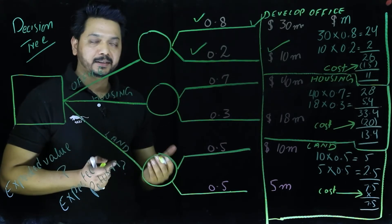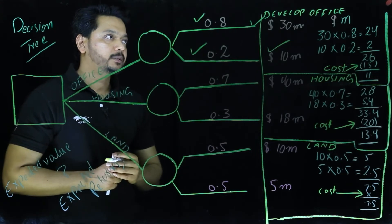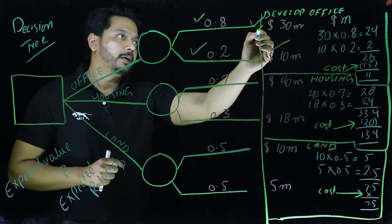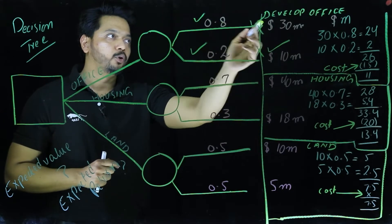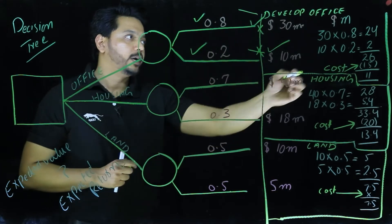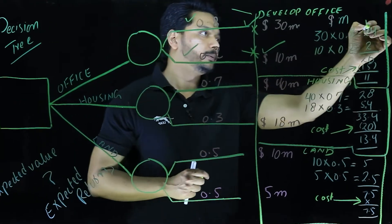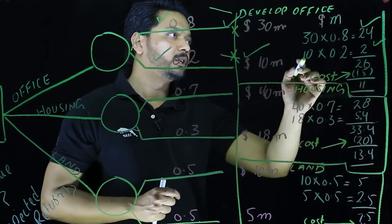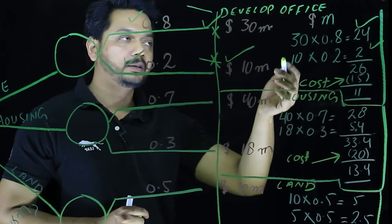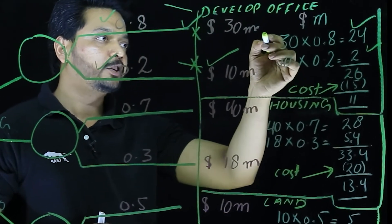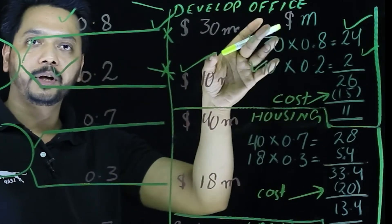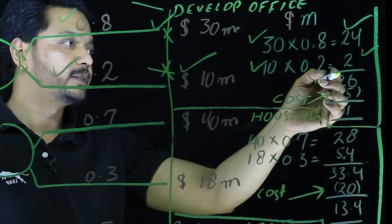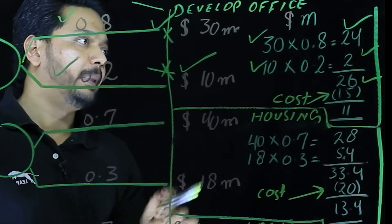The method says that what we need to do is that we can multiply the expected outcome with the probability, both of success and failure. So here I have calculated it. You see, once I have done the calculation here, I have multiplied the expected return with the probability in both cases of success and failure, which has given us $26 million.